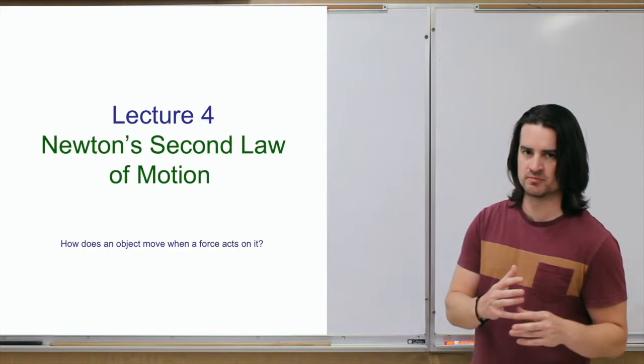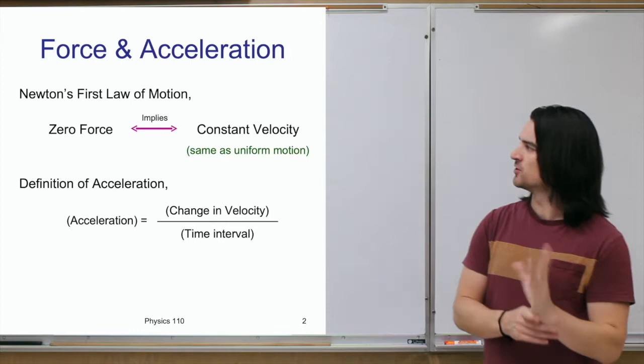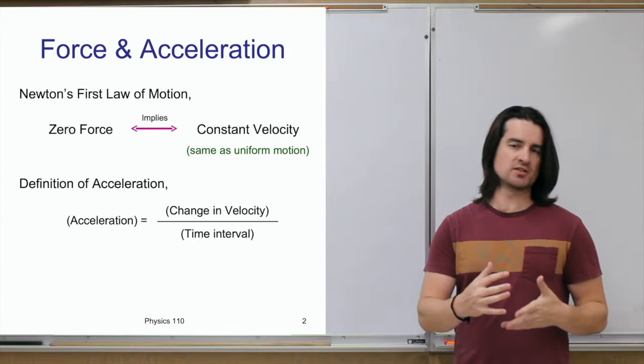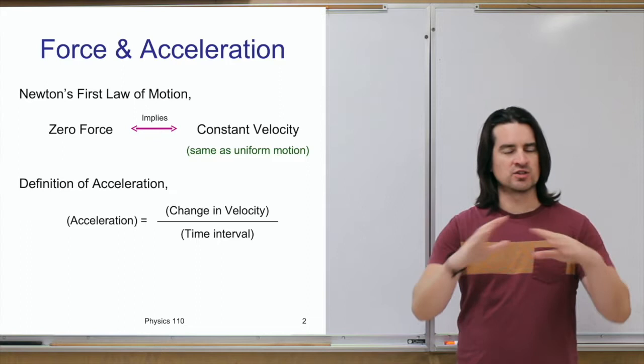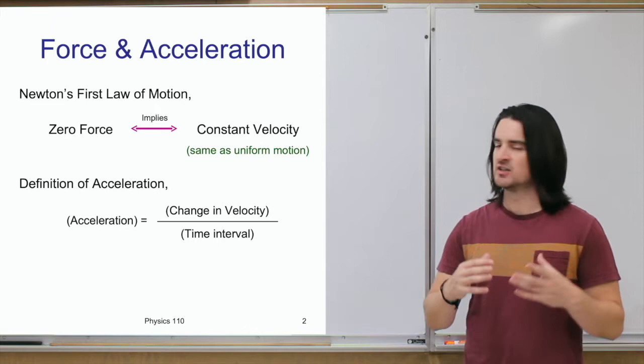All of that is going to come together in this lecture, where we're going to try to answer the question: how does an object move when a force is acting on it? A recap of Newton's first law: if there is no net force acting on an object — the net force being the sum of all forces — then that object is going to have a constant velocity, or be in uniform motion.